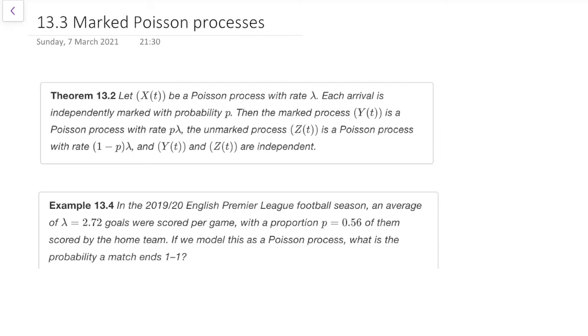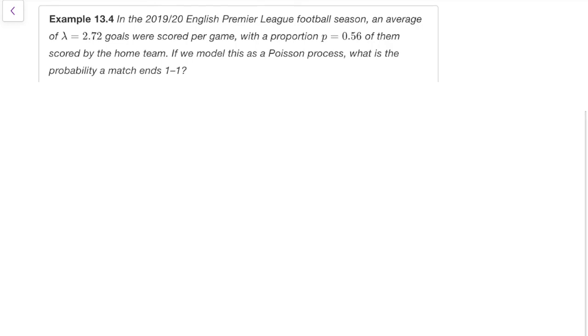So that's kind of wordy and there's this kind of weird thing called marking. But I think it will be much clearer if we use an example. So let's go here. In the 2019-20 English Premier League football season, an average of 2.72 goals were scored per game. A proportion, 0.56 of them, were scored by the home team. If we model this as a Poisson process, what's the probability the match ends as a 1-1 draw? Okay, so we're choosing to model this as a Poisson process. So total goals is following a Poisson process with rate 2.72 per game.